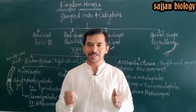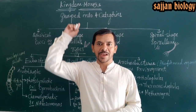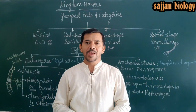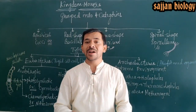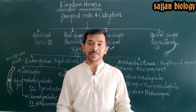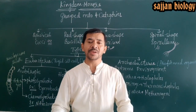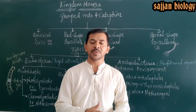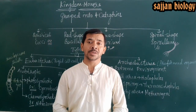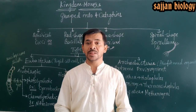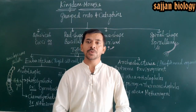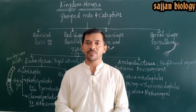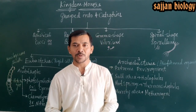Hello dear students, welcome back to Sargent Biology classes. In today's session we are going to discuss about Kingdom Monera. The bacteria are the sole members of this Kingdom Monera and these bacteria are abundantly available everywhere. They even live in extreme habitats — hot springs, deserts, snow, and the depths of the oceans — because of the presence of a rigid cell wall which helps in the protection of these organisms.